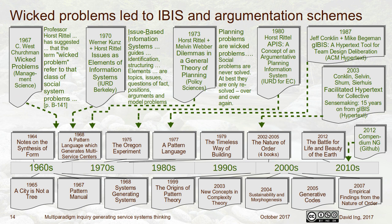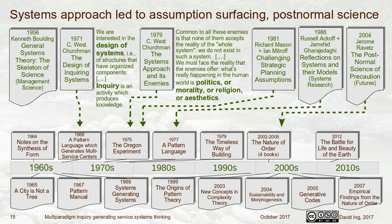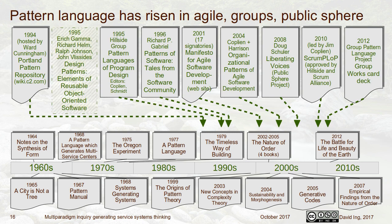Wicked problems led to issue-based information systems (IBIS), then to hypertext — and Compendium is a mapping tool for mapping out conversations. The systems approach leads to assumptions surfacing and questions about how you know you're moving forward, working through Churchman, Mitroff, and others. Pattern language actually shows up — The Timeless Way of Building influenced agile software development. When you talk to people on agile, they have a sense of Christopher Alexander; they understand things like piecemeal growth.